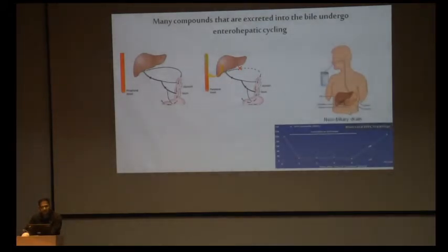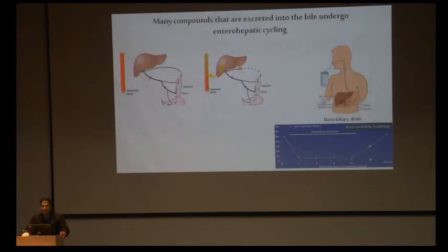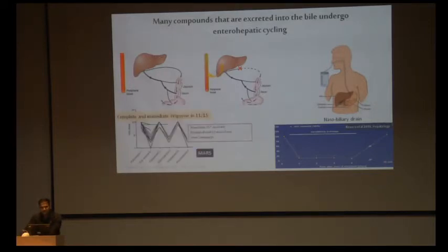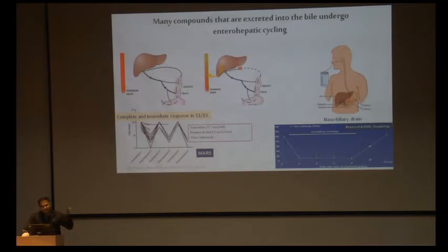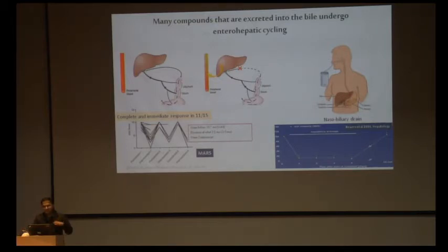We know this because biliary drainage — either via nasobiliary drain or partial biliary diversion — can lead to rapid improvement in itching symptoms, which recur once the drain is removed. Additionally, old data shows that albumin dialysis or MARS decreases itching rapidly, as toxins are removed from the blood. So something from the bile system spills into the systemic circulation, and its removal decreases itching symptoms.